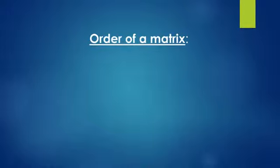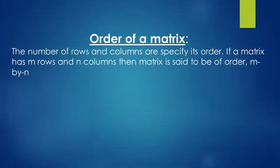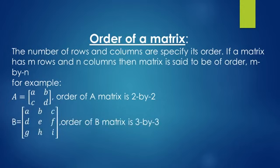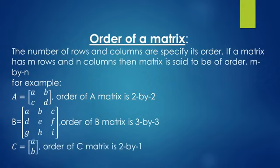Order of a matrix: the number of rows and columns specifies its order. If a matrix A has m rows and n columns, then the matrix is said to be of order m by n. For example, A = [a, b; c, d] has order 2×2, with two rows and two columns. Matrix B with elements a through i has order 3×3, with three rows and three columns. Matrix C = [a; b] has order 2×1, with two rows and one column.